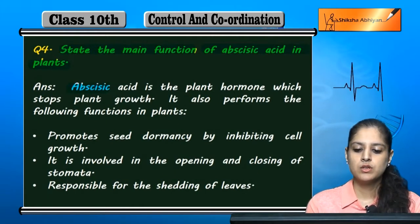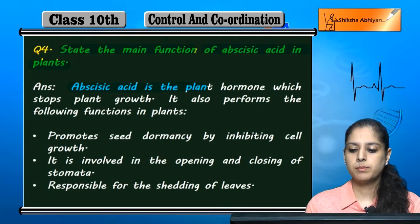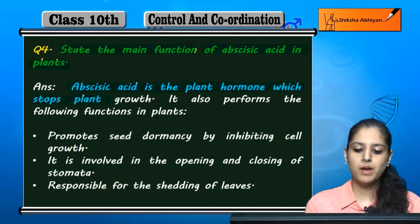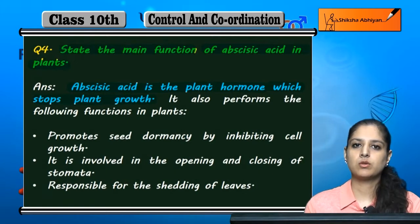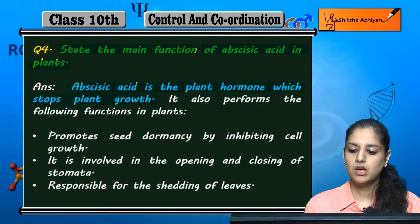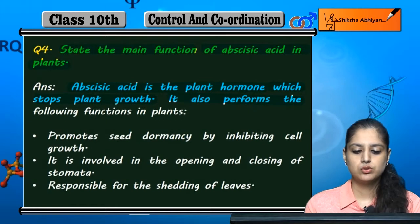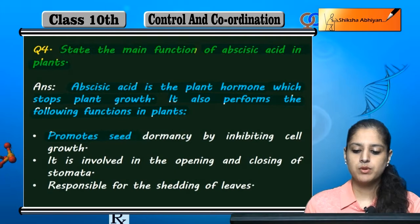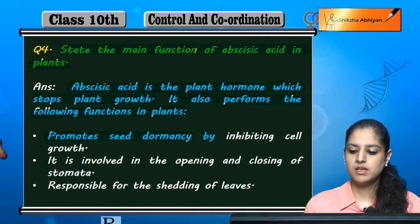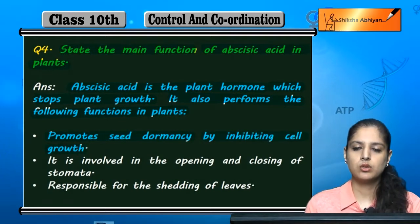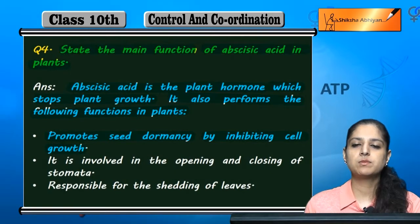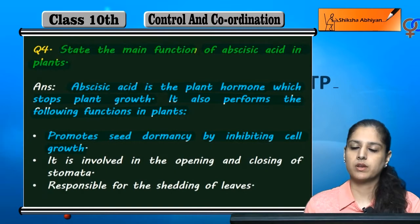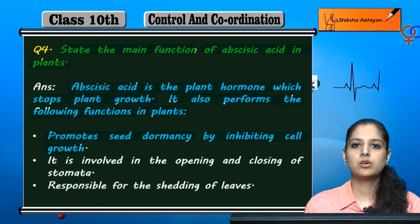Abscisic acid is a plant hormone found in plants. Its main function includes seed dormancy by inhibiting cell growth.